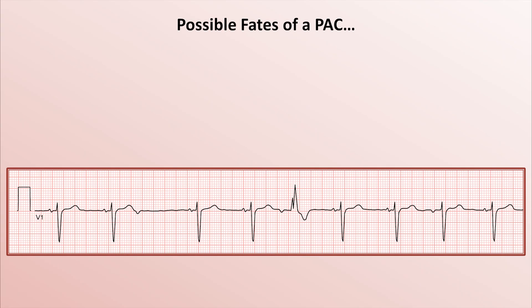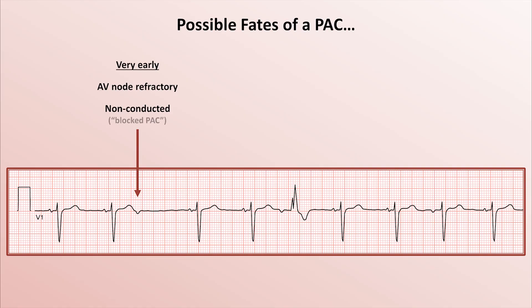I want to shift to discussing the possible fates of a PAC — meaning what happens in response to a PAC. There are three possibilities. If the premature P-wave is particularly early, the subsequent depolarization wavefront will reach the AV node at a time when it's still refractory. Thus, the P-wave does not get propagated distally, there is no subsequent QRS complex, and there is a pause in the patient's pulse. This non-conducted P-wave is often referred to as a blocked PAC.